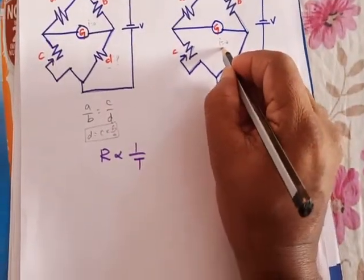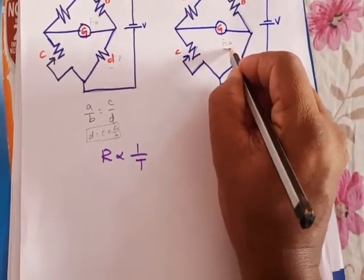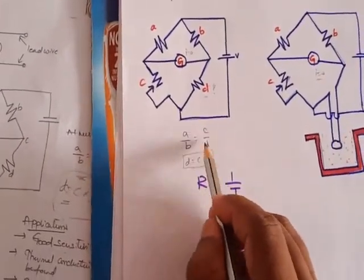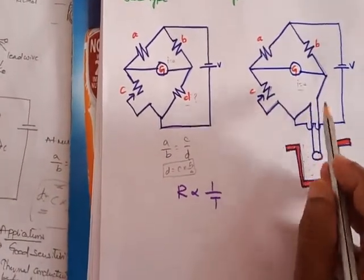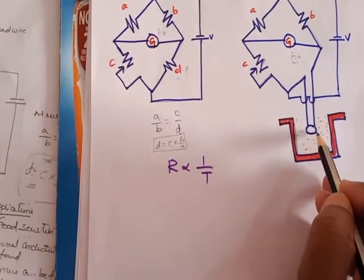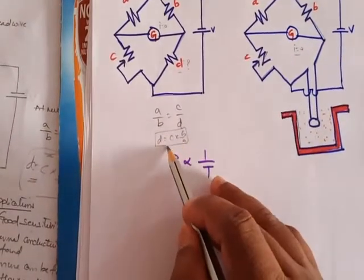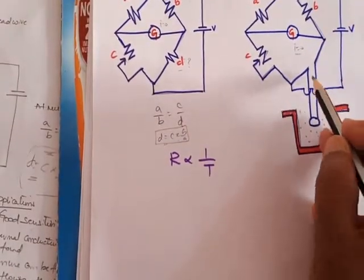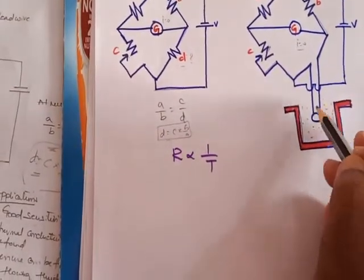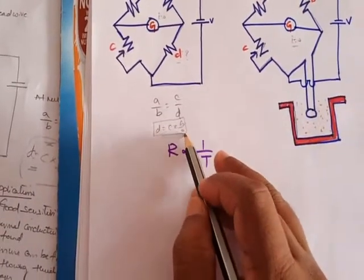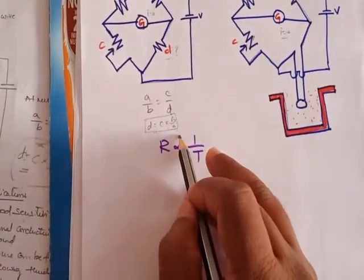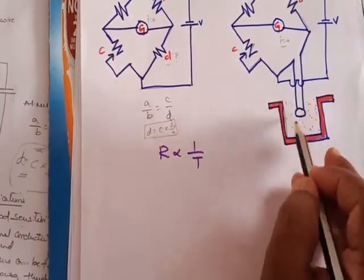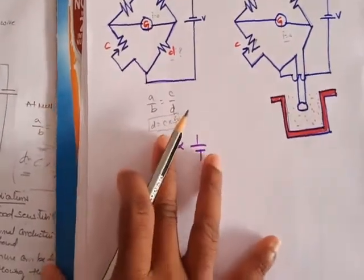We are making the current become nullified, that is I equals zero. We already know the equation — under balanced condition, A by B equals C by D. At the D terminal itself, we are connecting the thermistor whose measurement is to be carried out. From this formula, D equals C into B by A. The value of D is nothing but the value of temperature supplied to the thermistor being measured. The change in value of resistance is used for the measurement of temperature — the resistor value, whatever it is changing, is indicating the measurement of temperature.